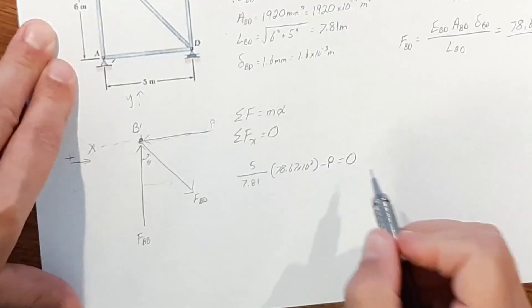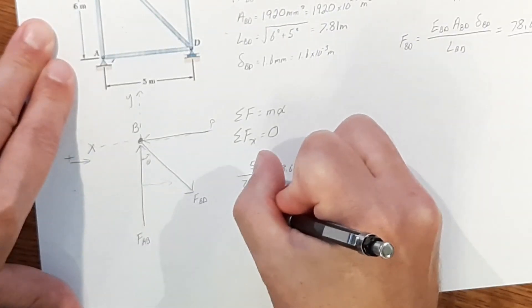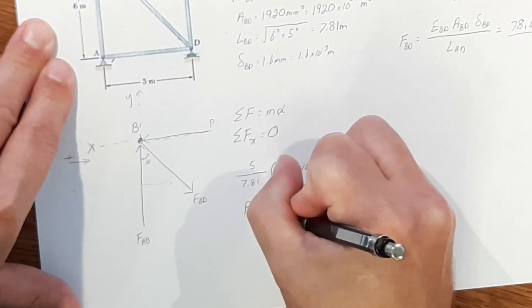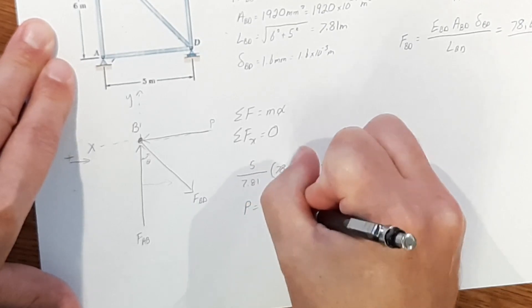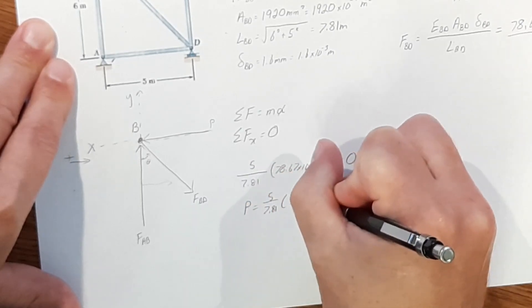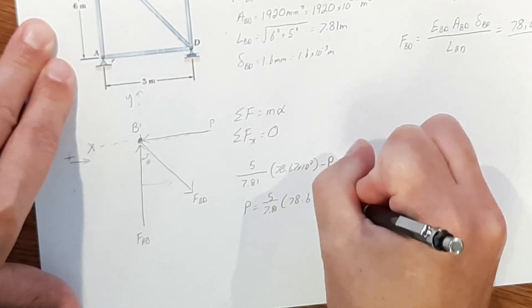If we move P to the other side, we're going to get P equals 5 over 7.81 times 78.67 times 10 to the third.